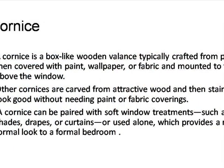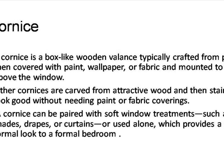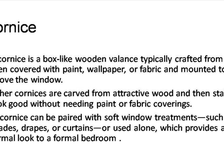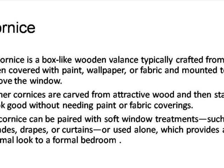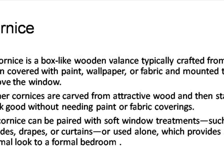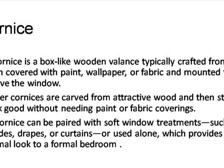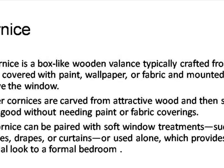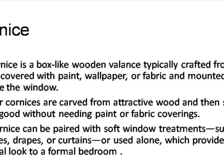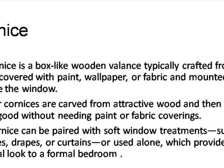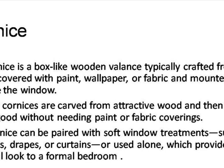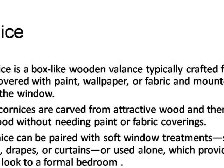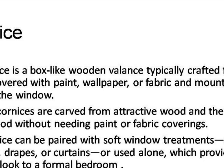What is a cornice, and what is the difference between a cornice and a pelmet? A cornice is a wooden box-like structure made from plywood, then covered with fabric, paint, wallpaper, or any other customized material, and mounted on the wall above the window. A cornice can be made from carved wooden design or simply polished wood, and it is not necessary to cover it with paint, wallpaper, or fabric.